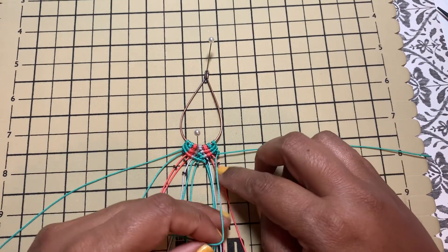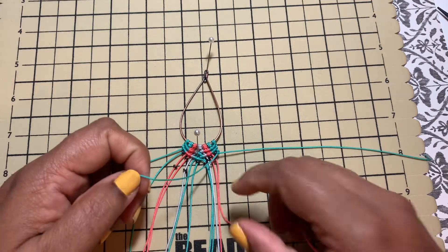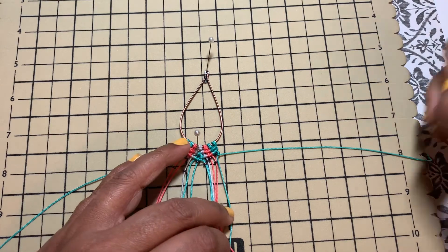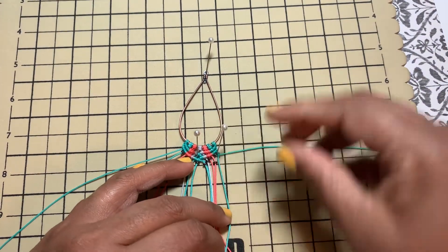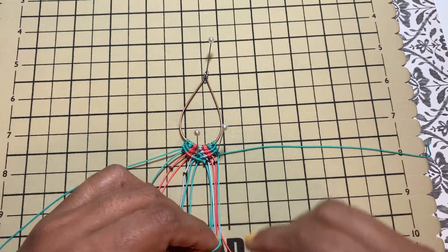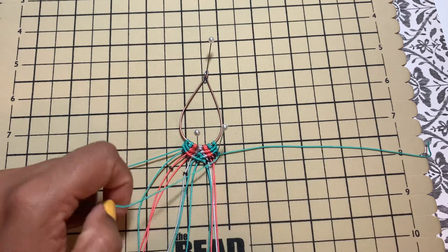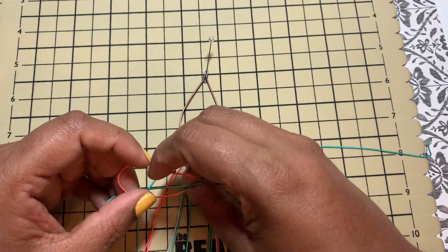Then the next cord and put the bead all the way up here. This is where you'll need your pins, that will give you stability. Now you move the holding cord like this and then do the knotting cord.